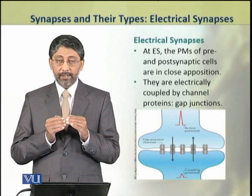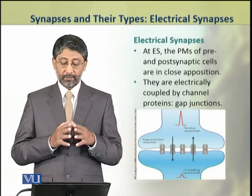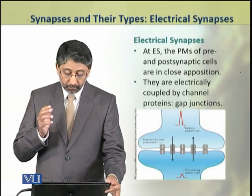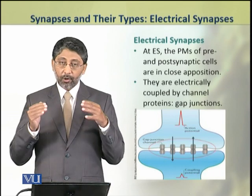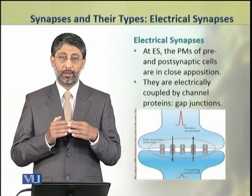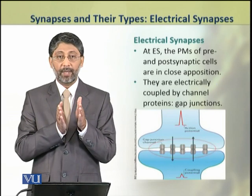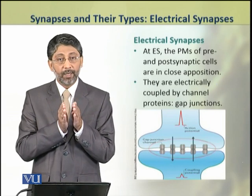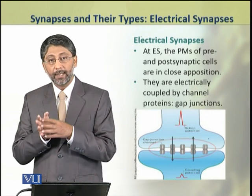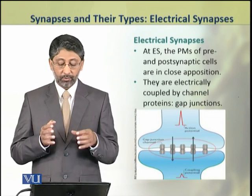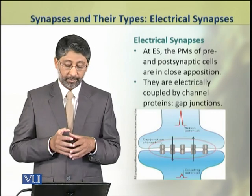At the electrical synapses, the plasma membranes of pre- and post-synaptic cells are in close apposition, and they are electrically coupled through the gap junction proteins.